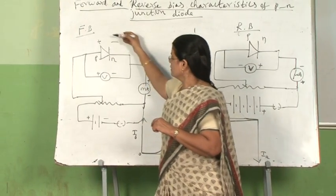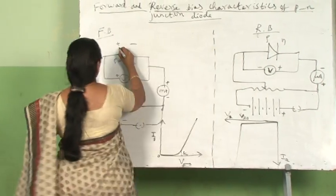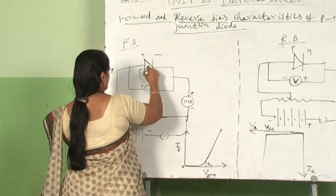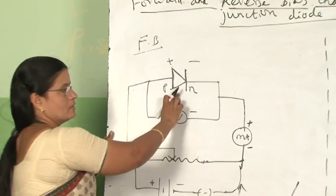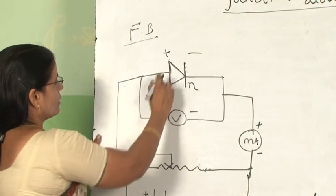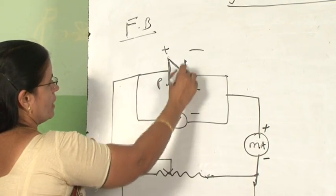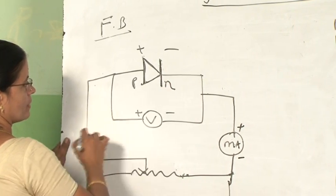So we know very well about the forward bias connection. Now this triangle and a line represent the symbol of junction diode. Now the triangle represents P-type and the line, the vertical line, represents the N-type. So this is circuit symbol of P-N junction diode.